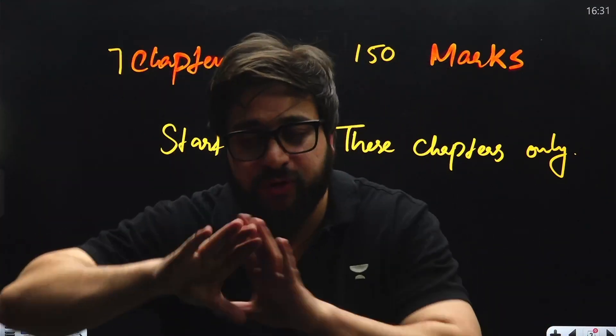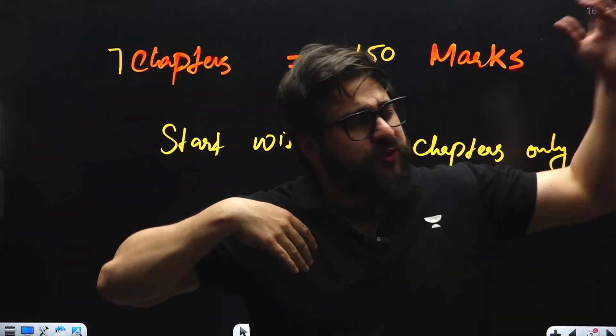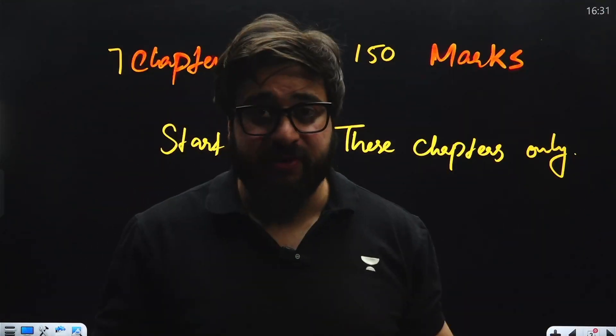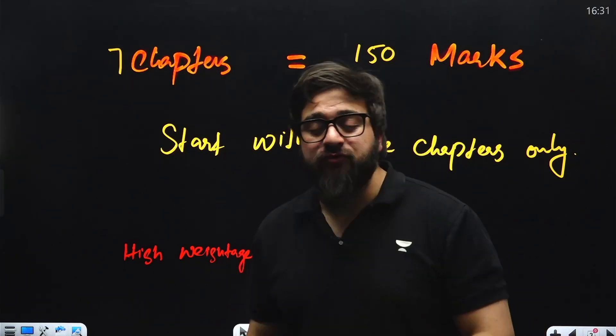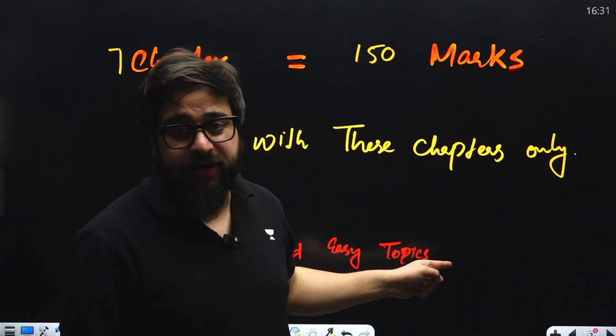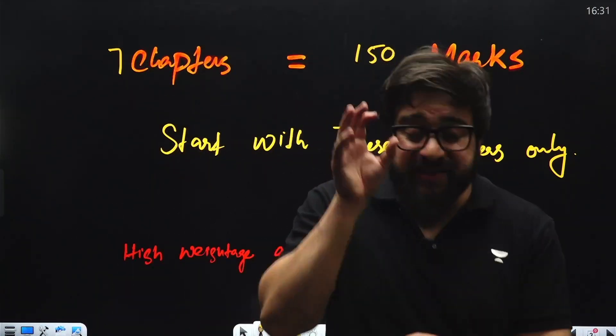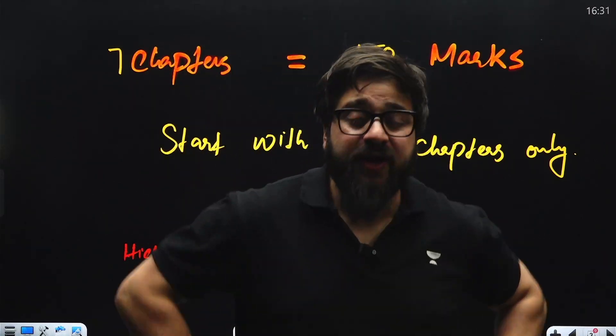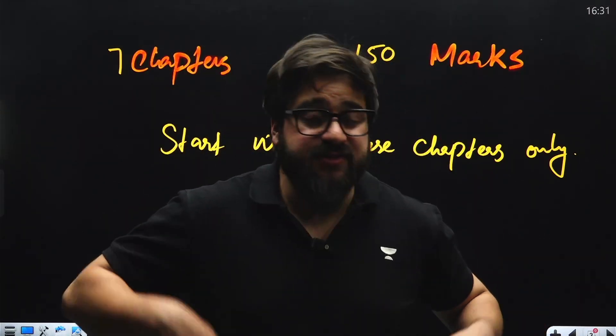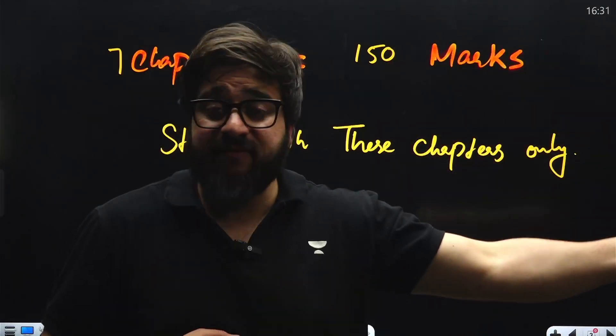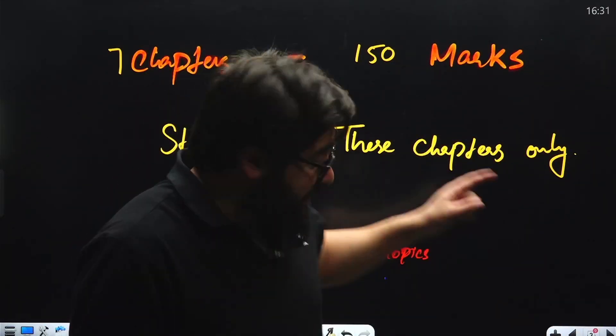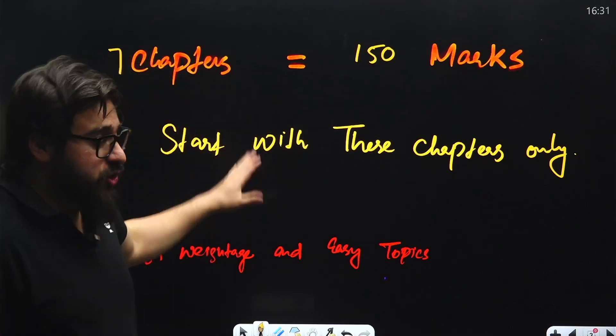In just the first four months, you'll land on the safe score, you'll cross the safe score. Then you can go with the moderate chapters and then the easy chapters. For that, we're coming up with this session in which I'll be telling you what are the chapters you should go with first when it comes to your physics. Many times students say, sir, you're saying start with high weightage chapters but you don't say what are those high weightage chapters.